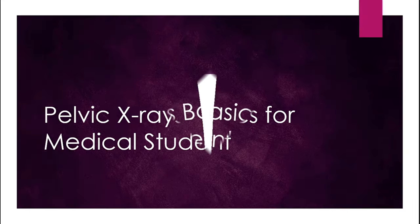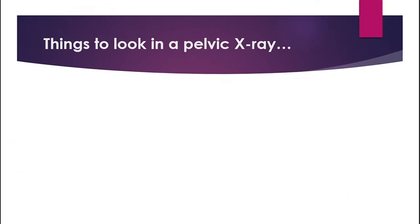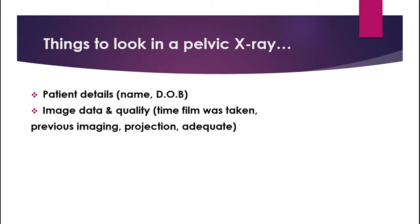When you get a hip x-ray to comment or document on, always have a structure. First, document the patient's data in terms of their name, date of birth, and ID number. Then continue with the image data and image quality — when was the film taken, any previous imaging, and the quality can be commented on based on the rotation, projection, and exposure. For example, you can say: this is an AP film pelvic x-ray with good exposure and good penetration and the film is not rotated.